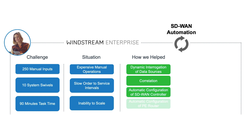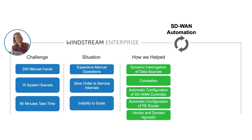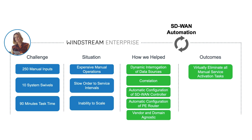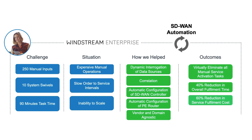Blue Planet automates configuration of the SD-WAN controller and the PE router across vendors and domains. Our solution enabled Windstream to virtually eliminate all manual service activation tasks. We also see a reduction in overall fulfilment time from order to acceptance of around 40%, and a reduction in service fulfilment cost of around 60%. And finally, by eliminating SD-WAN vendor lock-in, Windstream can be more competitive with their offering and improve margins.